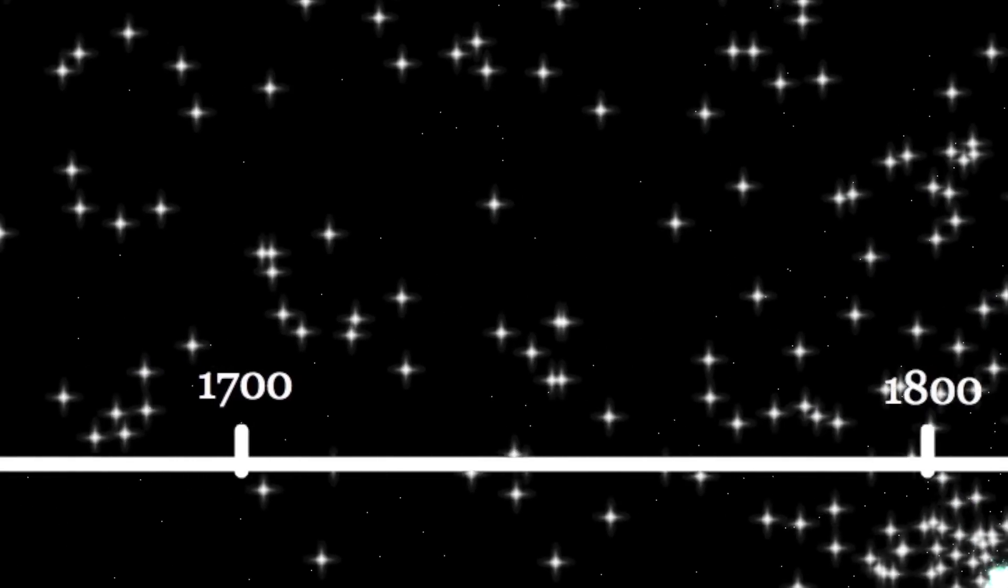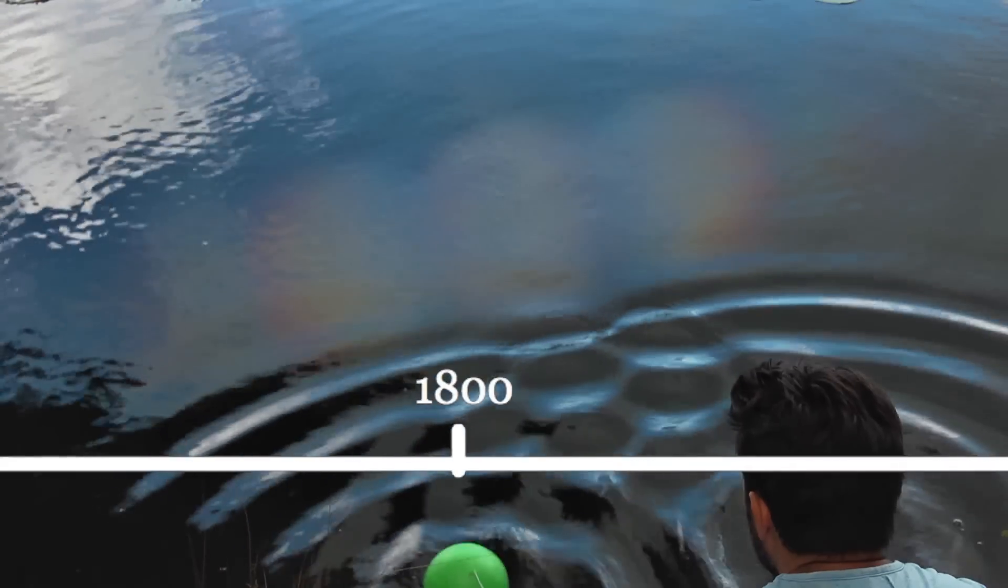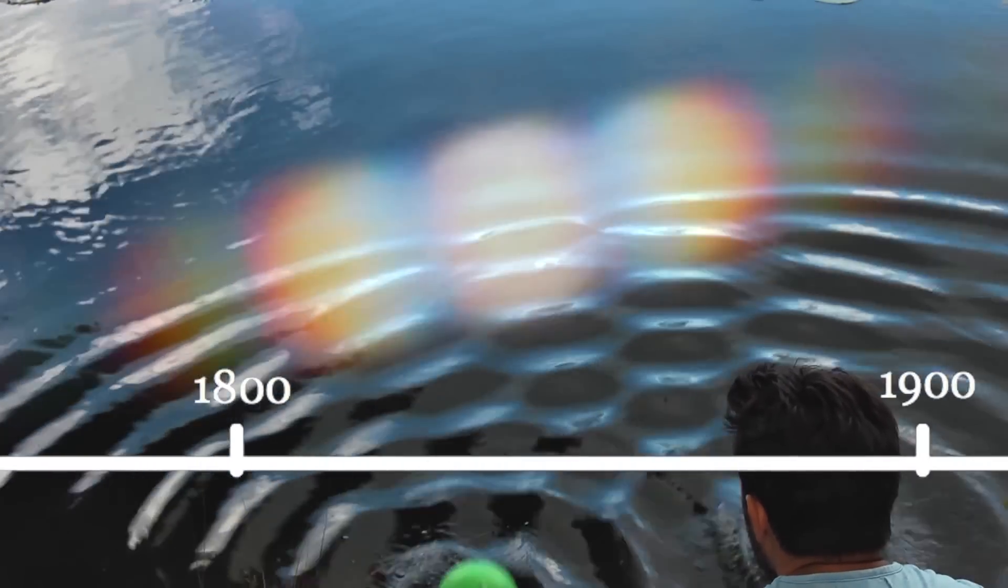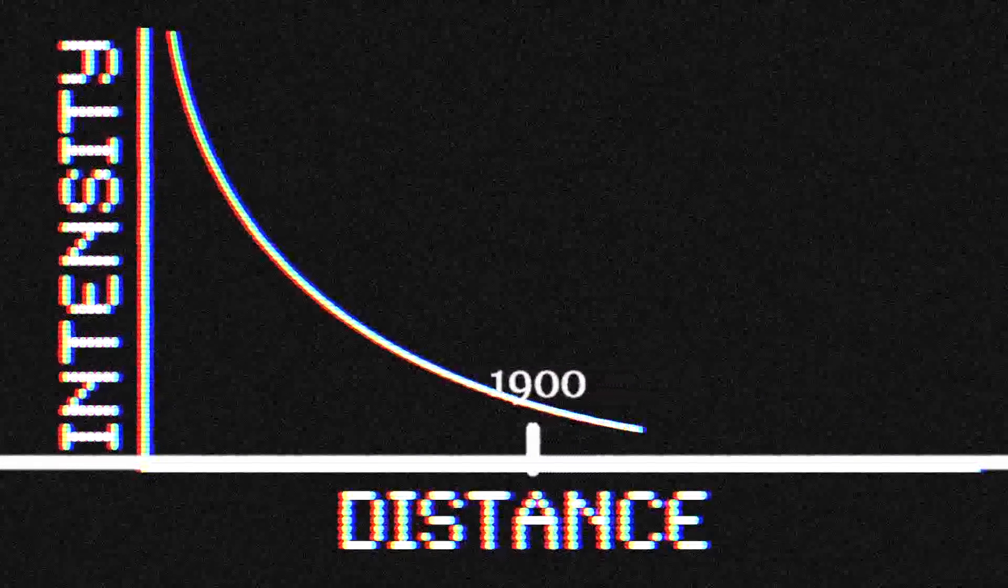This debate appeared to be settled in 1801 by Young's double slit experiment, which showed light passing through two slits produced patterns like water waves. But by 1900, it was clear that light energy was not evenly distributed as expected for a wave.